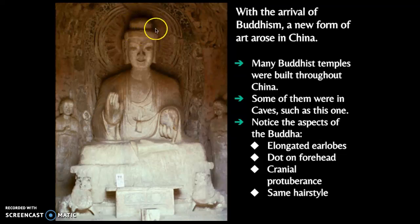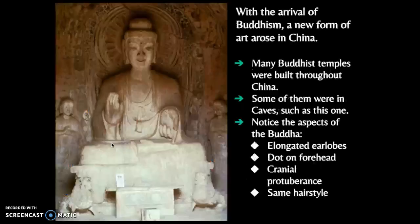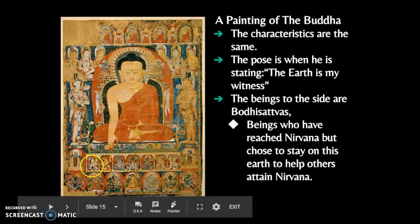We see the similar hairstyle of one who had left wealth and luxury behind. Paintings of the Buddha also emerge with similar characteristics. Pay attention to the hands — where the hands are placed indicates different stages of the Buddha's life. This one represents his enlightenment, touching the earth to say the earth is witness to his enlightenment. Hands up could represent talking to people or a gesture of peace. Here we see bodhisattvas surrounding the Buddha.